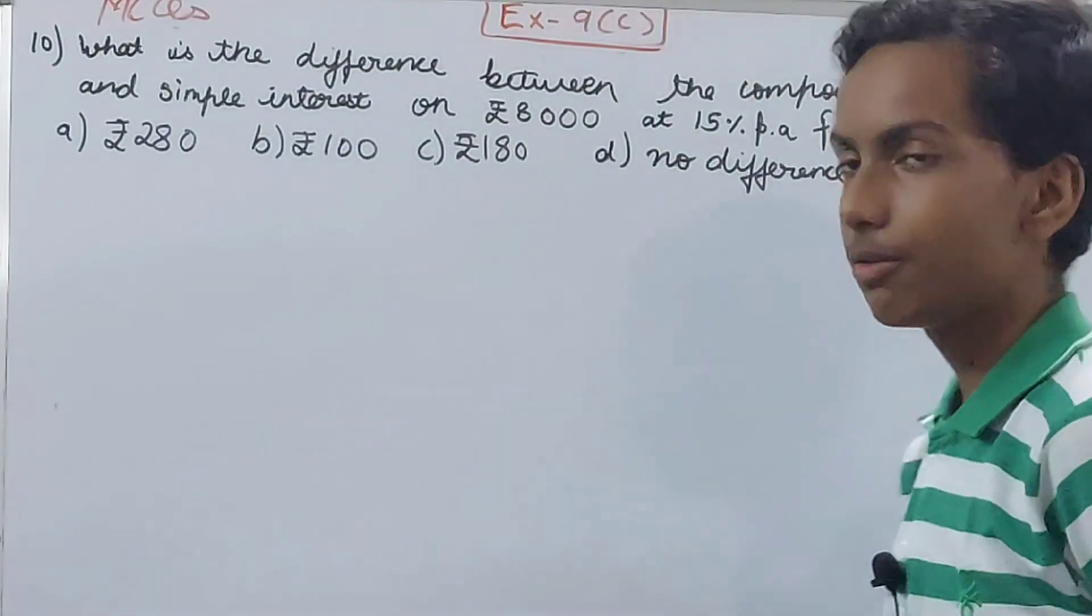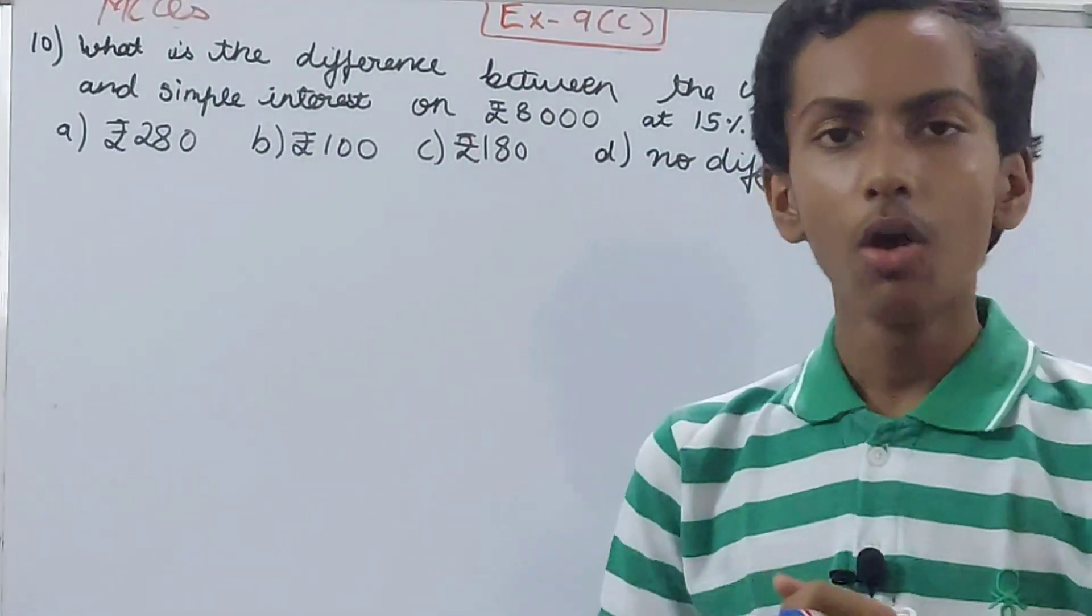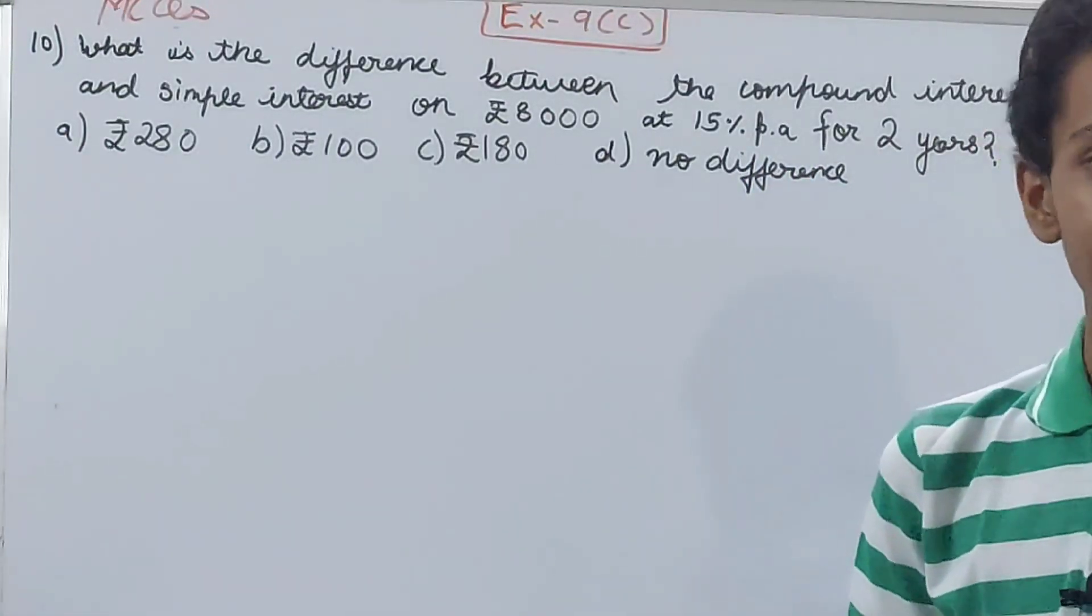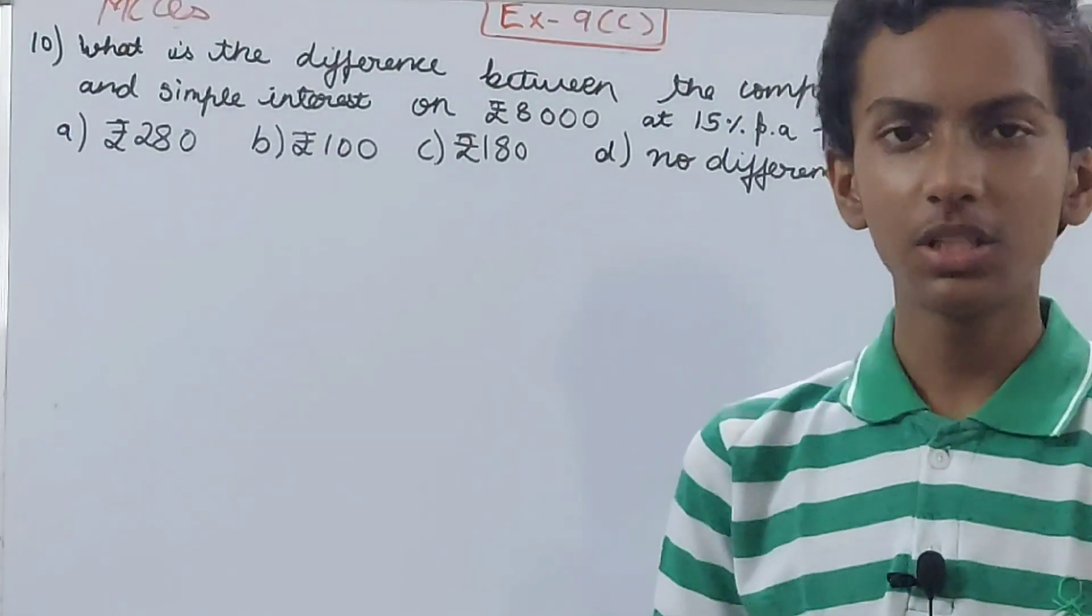Very simple. First we have to calculate the simple interest and compound interest on 8000 for two years at 15 percent per annum. We have to calculate them using the given values: principle is given, rate is given, and time is given.